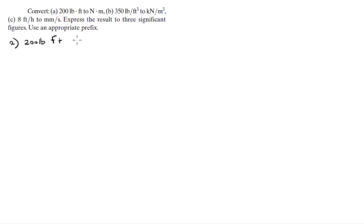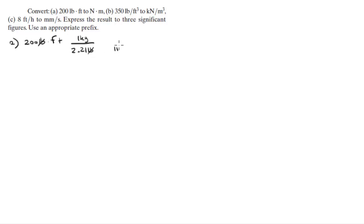First, we know that in 2.21 pounds there is one kilogram, so we get rid of the pounds and we get kilograms. Now that we have kilograms, we can reach Newtons by multiplying by 9.81, but first we're going to convert feet to meters.